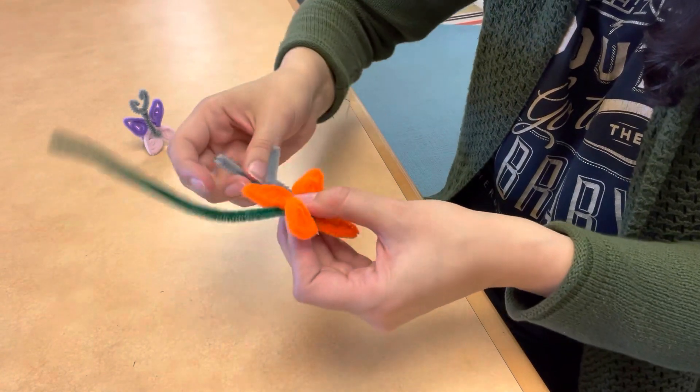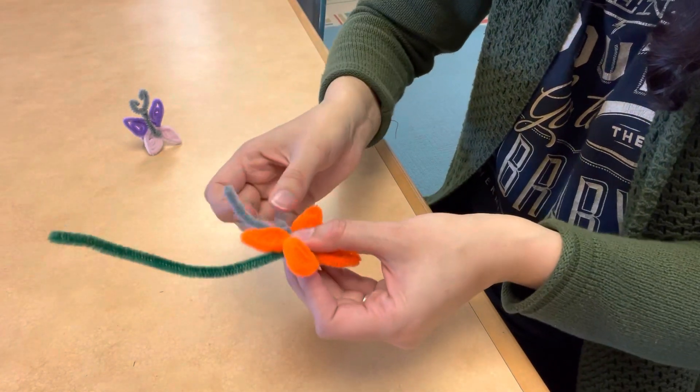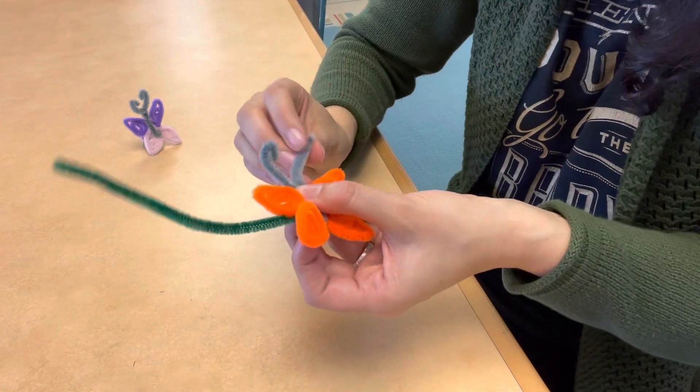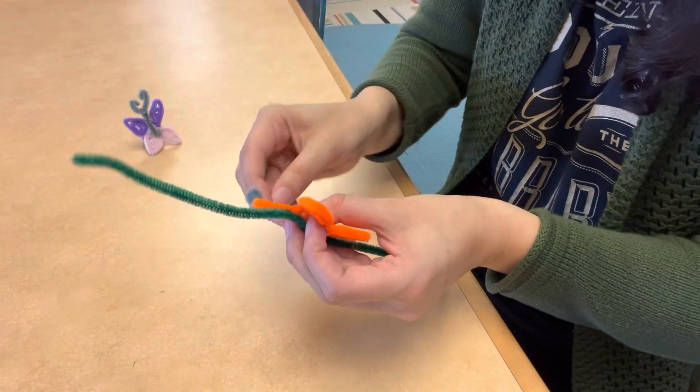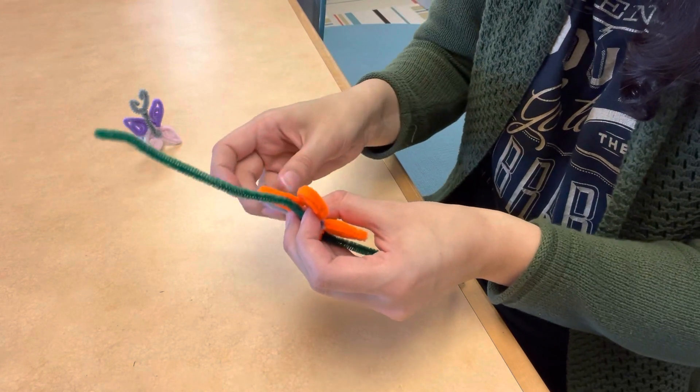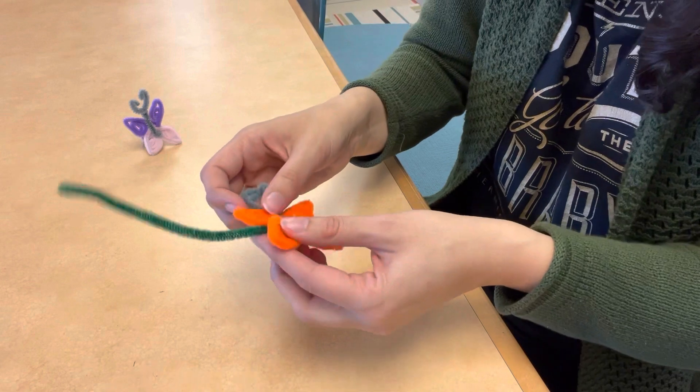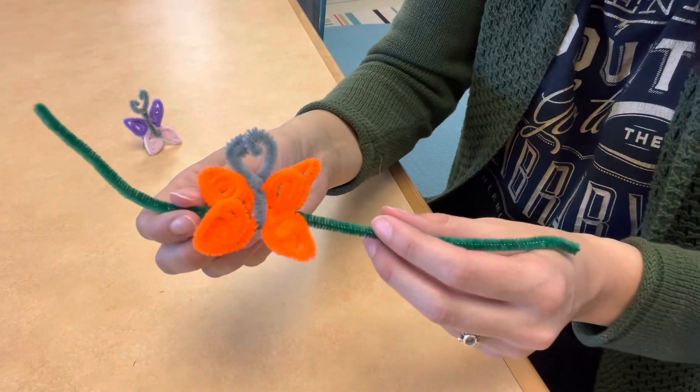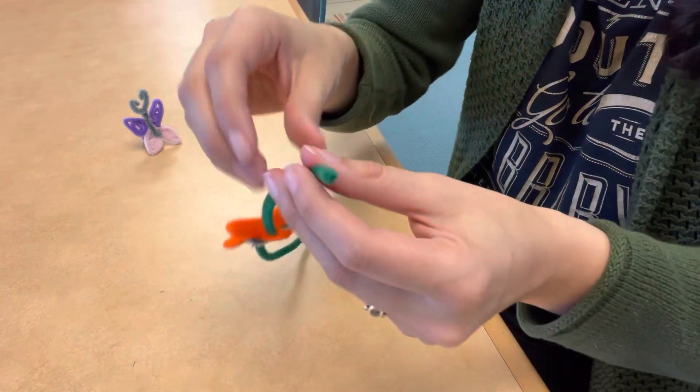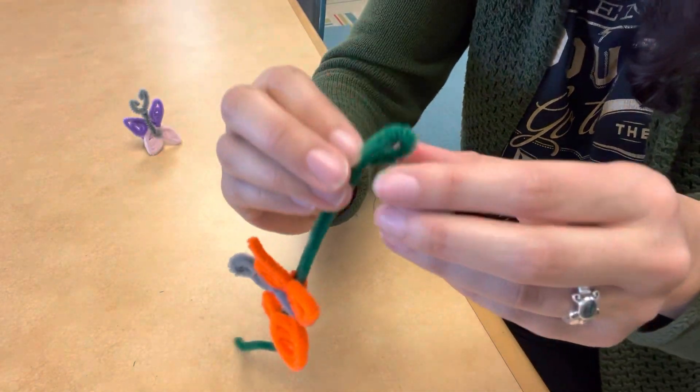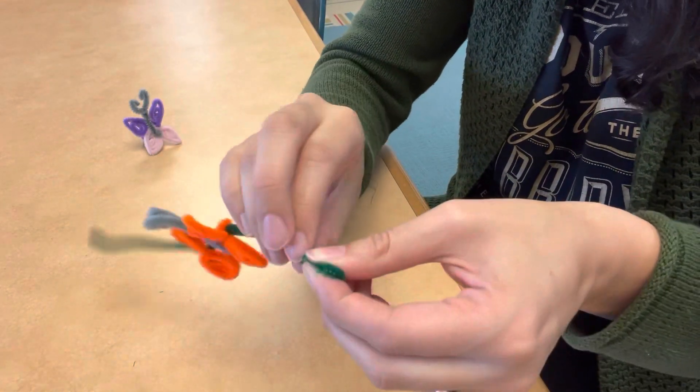Then for the last step, you're going to take the bracelet part of it and make a little loop just like this and twist it just so it stays. Then you're going to do the same for the other side, make a loop and twist.